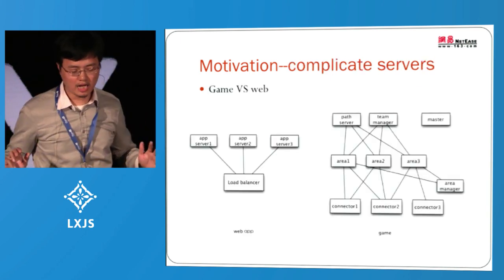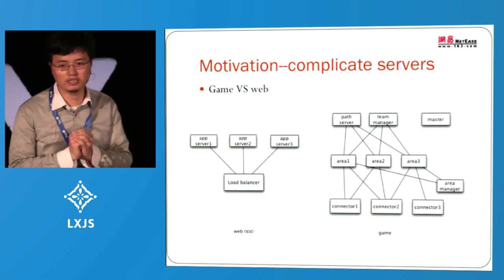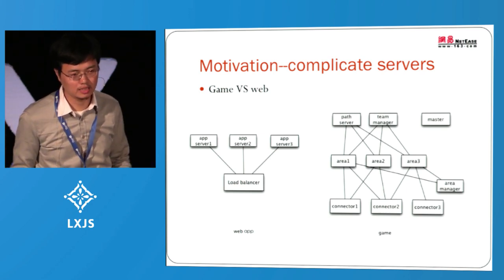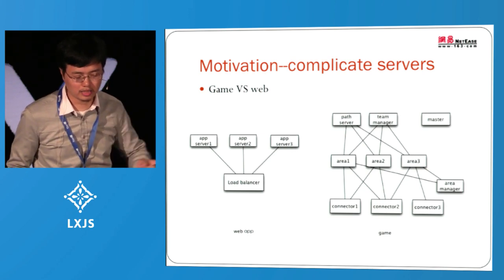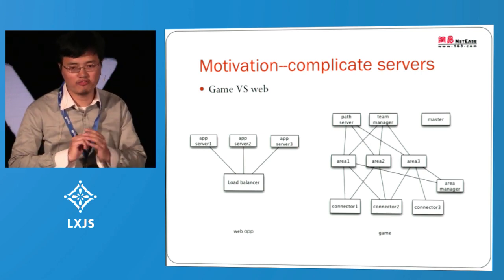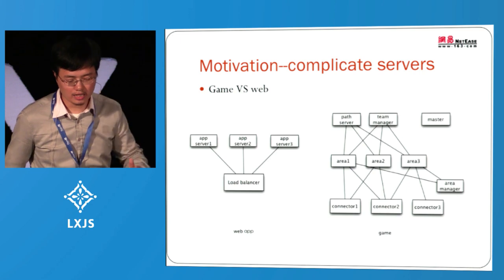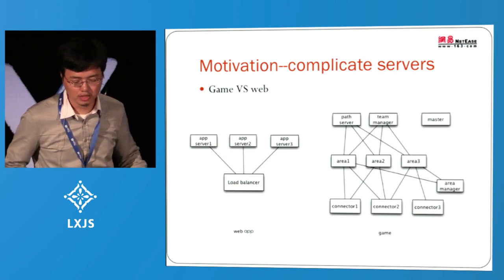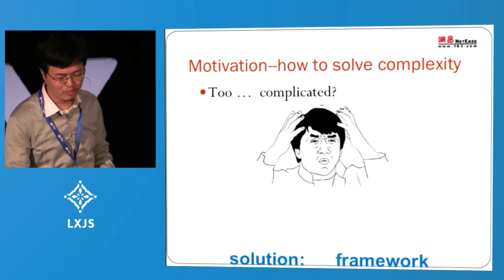To summarize the difference: web servers on the left enjoy the benefit of a load balancer — the architecture is simple and stateless. Game server architecture on the right has many different types of processes that need to talk to each other, and the architecture is like a spider web. It is quite complicated. So how do we solve this? A framework, of course — that's what I'm going to talk about.